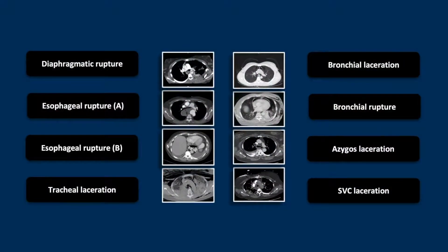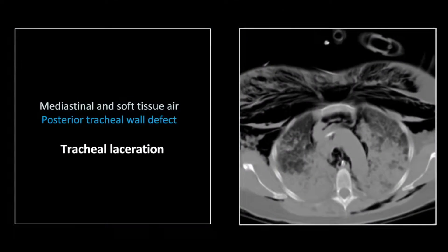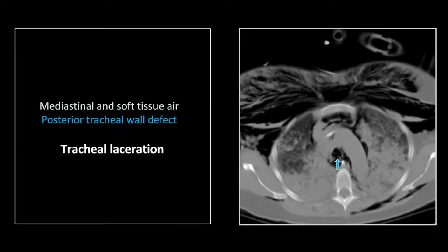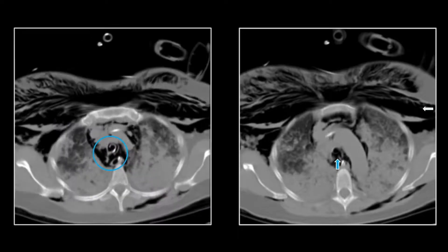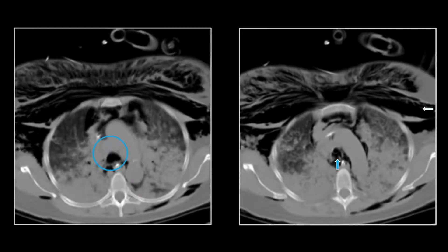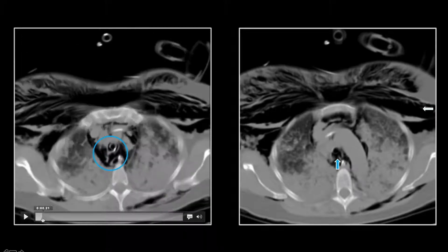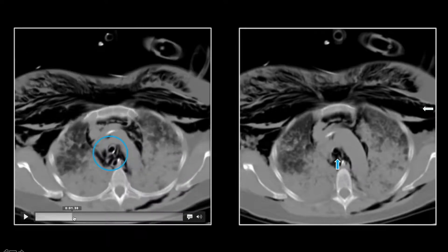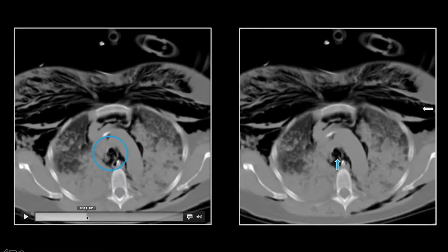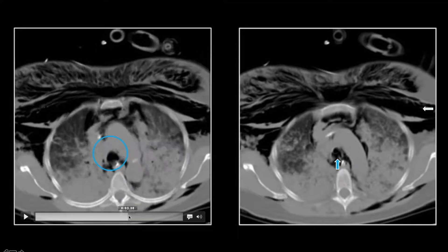Our next case is a traumatic tracheal laceration. There is extensive extrathoracic soft tissue gas. You can see a small defect in the posterior and distal trachea immediately adjacent to the tip of an endotracheal tube. This relationship is better demonstrated on the movie, where you can really appreciate the defect in the posterior wall of the trachea immediately adjacent to the tip of that tube.